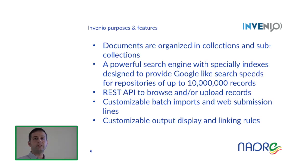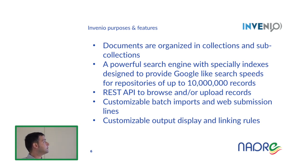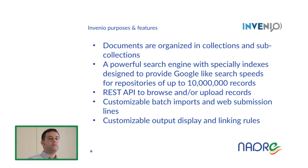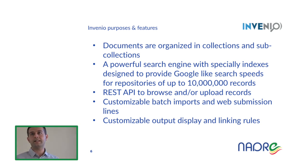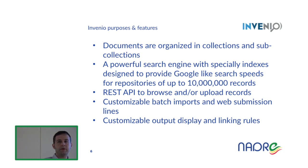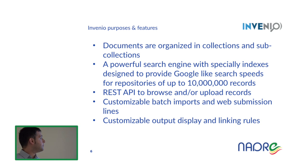Invenio is also compliant with the MARC 21 standard, which is a bibliographic standard used all over the world. In Invenio, documents are organized in collections and sub-collections. We have already created the collection where your documents and data will be stored, and we can also provide many other sub-collections for your institution. Another important feature is its powerful search engine, designed to provide speed when searching the repository. It also provides REST APIs that Roberto mentioned before.